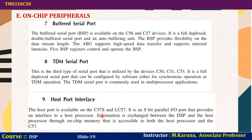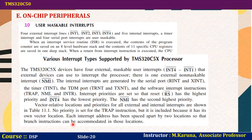The host port interface, available on C57S and LC57, is an 8-bit parallel port that provides an interface to a host processor. Information can be exchanged between the DSP and host processor through on-chip memory accessible to both. Interrupts can occur internally or externally. There are four external interrupt lines INT1 to INT4 and five internal interrupts — a timer interrupt and four serial port interrupts — all user maskable. When an interrupt service routine is executed, the contents of the program counter are saved on an 8-level hardware stack and 11 specific CPU registers are saved in a one-deep stack.